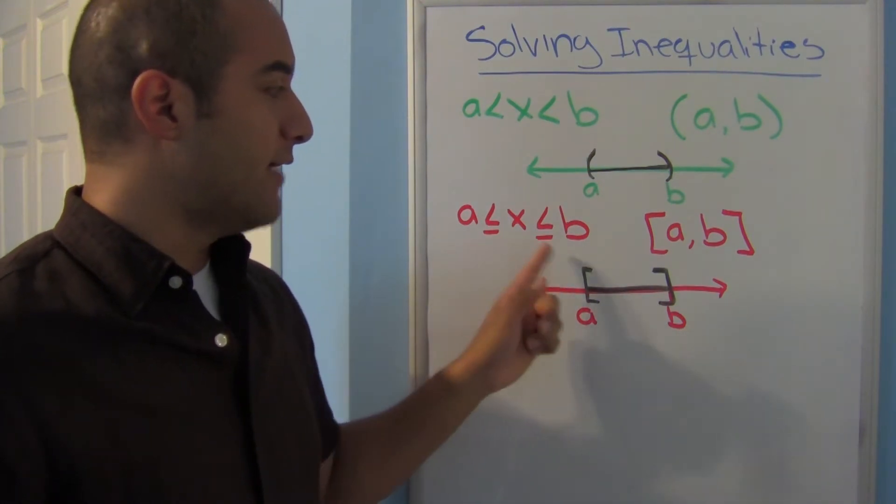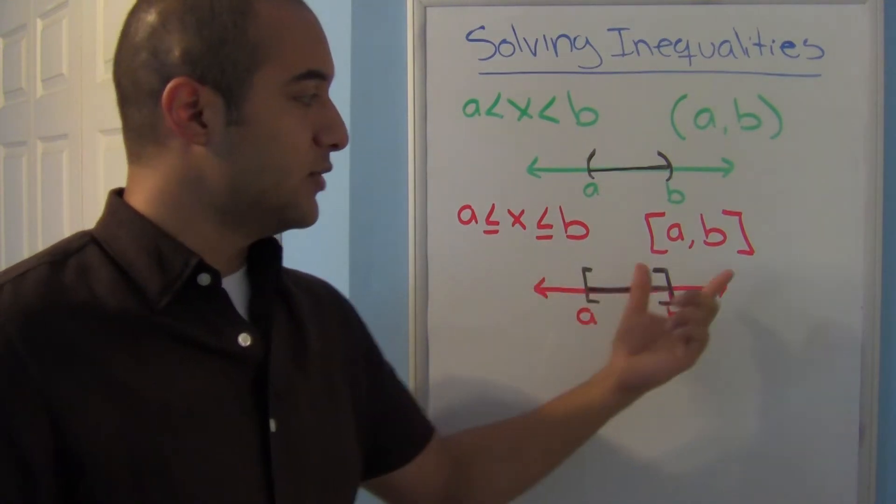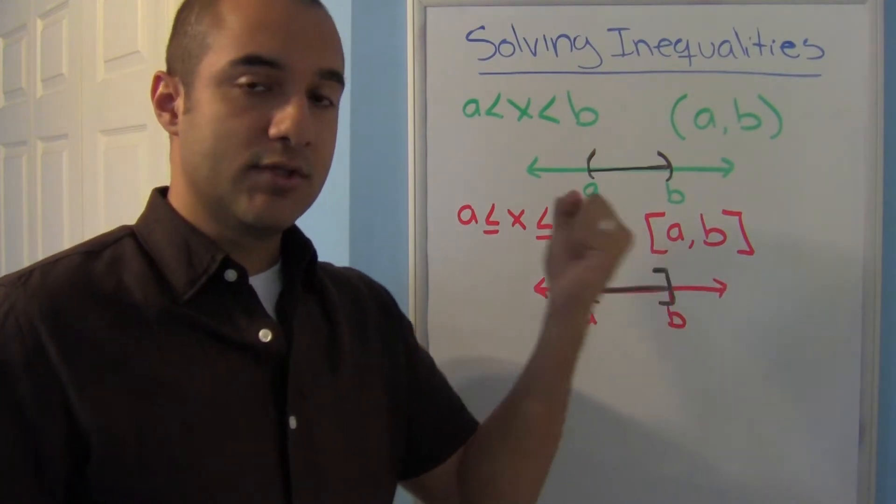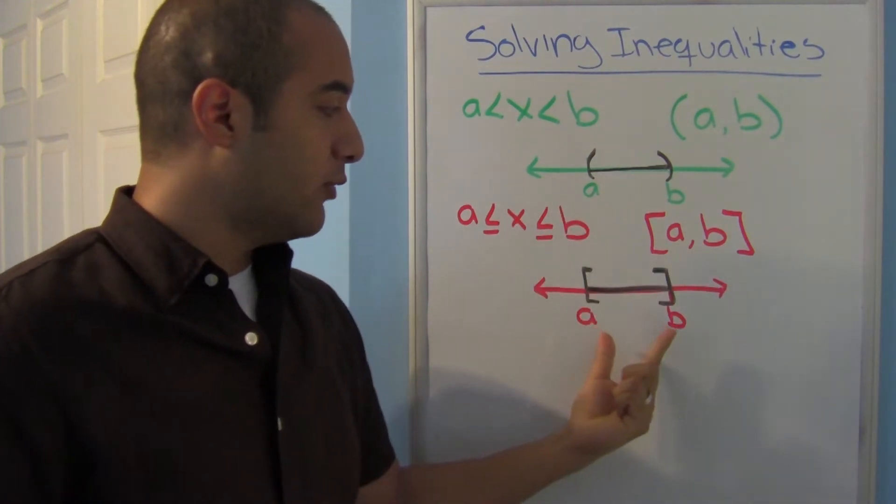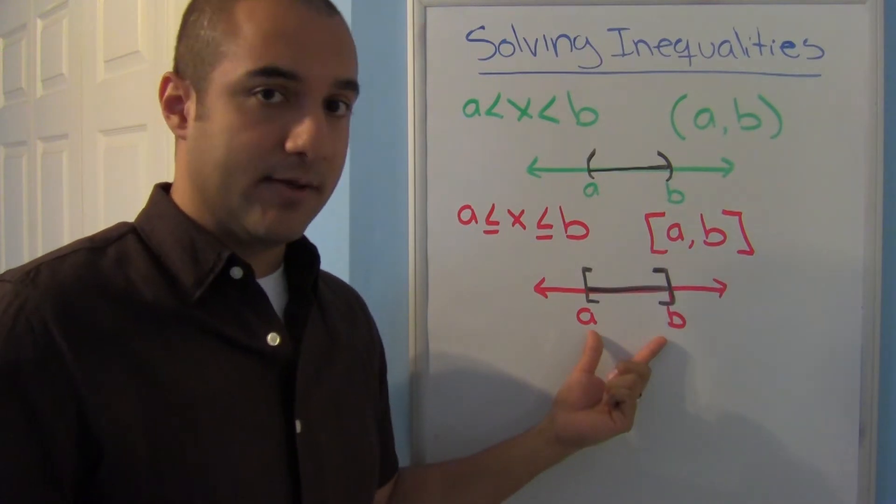Here where I have equal to signs, notice that I'm using a bracket. That's the same as using a closed circle, and when I graph it, once again I use the brackets that match that up.